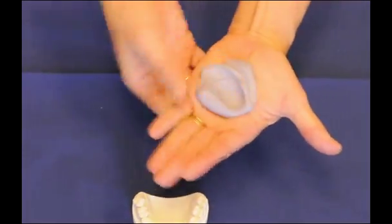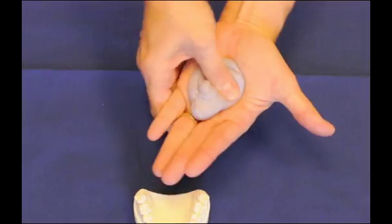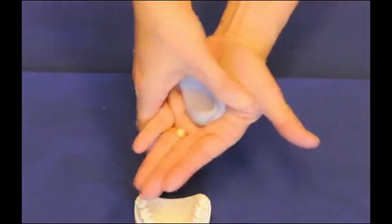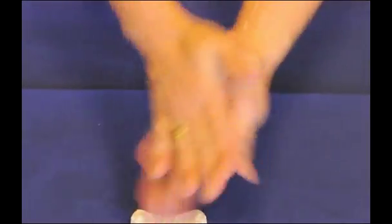Once I get the material completely incorporated, and I do have a uniform color, I'll then be able to form the material over the dental cast that I have in front of me.